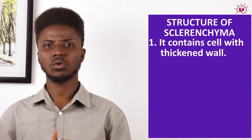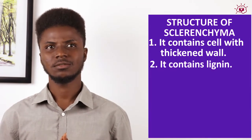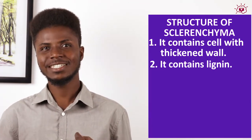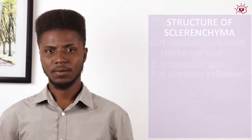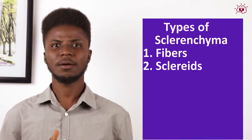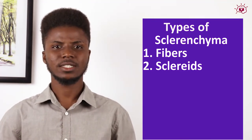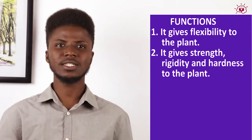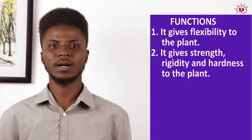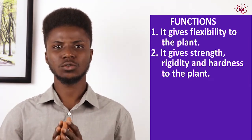What is the structure of sclerenchyma? It contains cells with thickened walls, and one important thing is that it contains lignin — lignin is associated with dead plant cells. It also contains cellulose. There are two types of sclerenchyma: the fibers, which are elongated, and the sclereids, which are non-elongated. The function of sclerenchyma is to give flexibility, strength, rigidity, and hardness to the plant, especially because of the fibers.